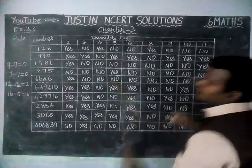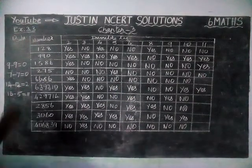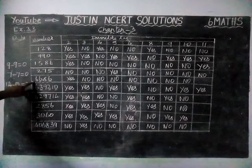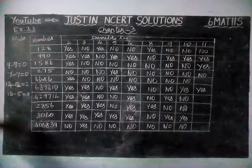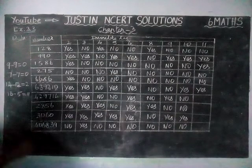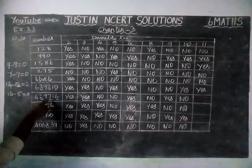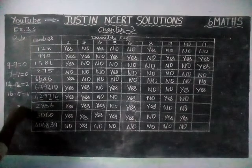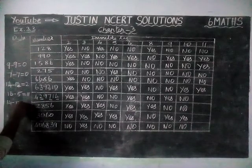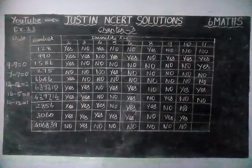Sorry, we missed one sum earlier — we will solve it now. That one is no only. Next number: odd digits 4, 7, 2 — 4 plus 7 is 11, 11 plus 2 is 13; even digits 1 plus 9 is 10, 10 plus 4 is 14; 14 minus 13 is 1 — not divisible by 11, therefore this number is not divisible by 11.